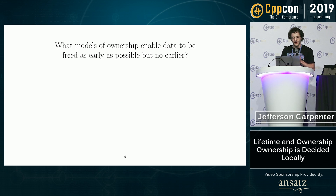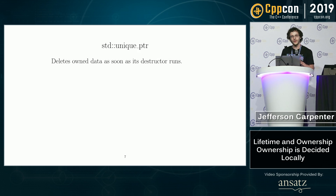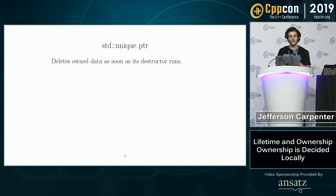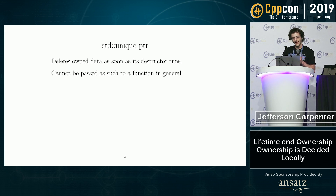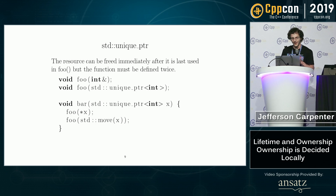So the question is: how do we free data as early as possible, but no earlier? Let's take a look at std::unique_ptr. This deletes data as soon as the destructor runs, but it can't be passed as such to functions in general — and let's see why.